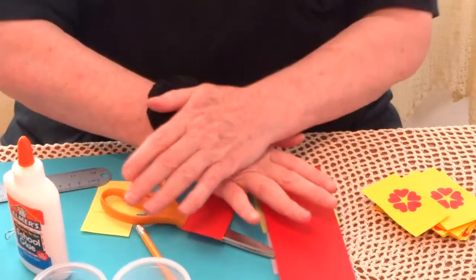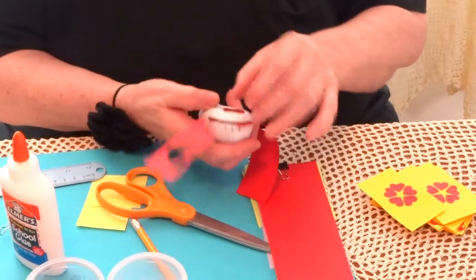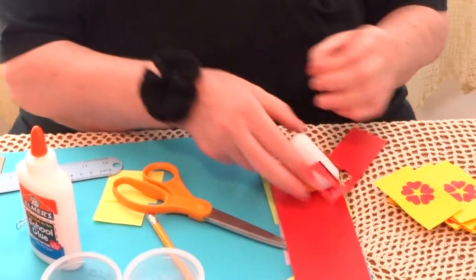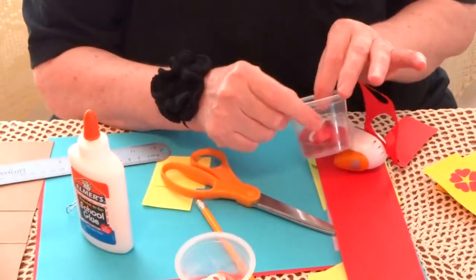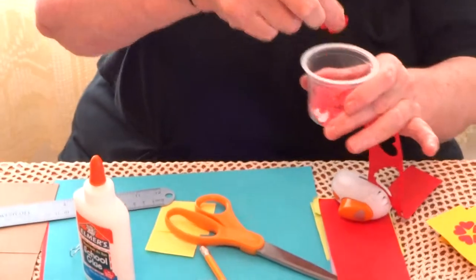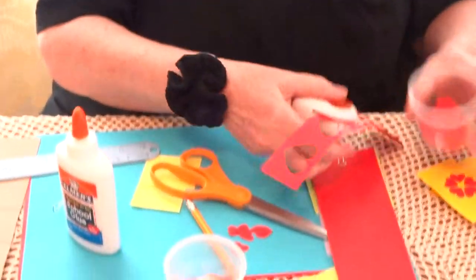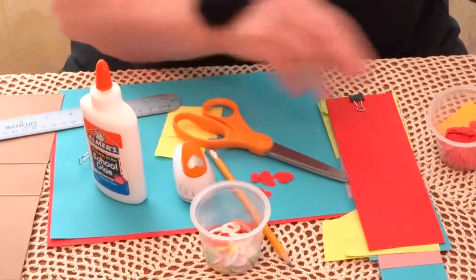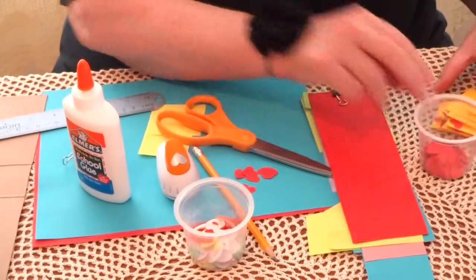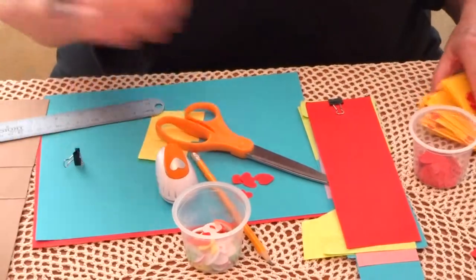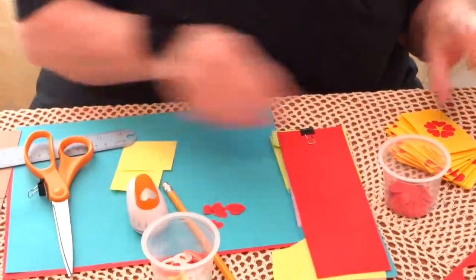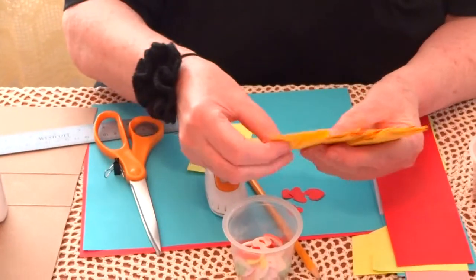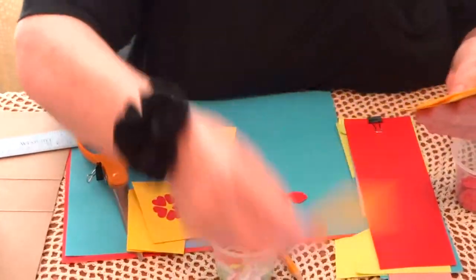I punched ahead of time so we have a lot of tiny hearts. Now what we are going to do is take and start counting. On one card you are going to glue one heart, I glue three.